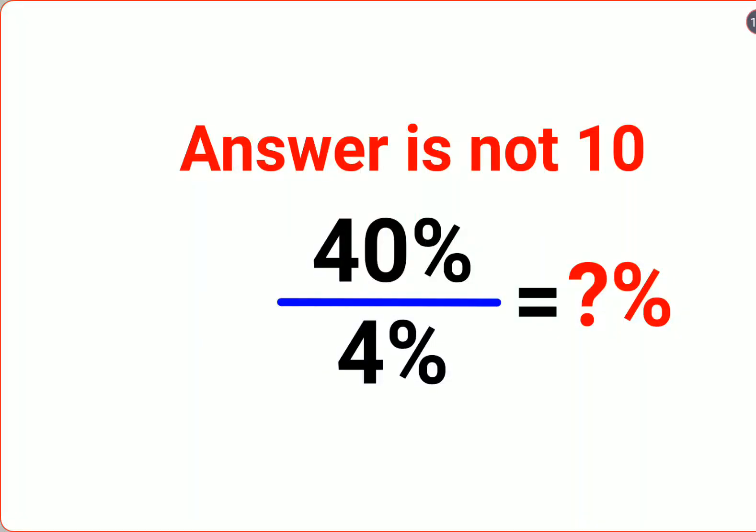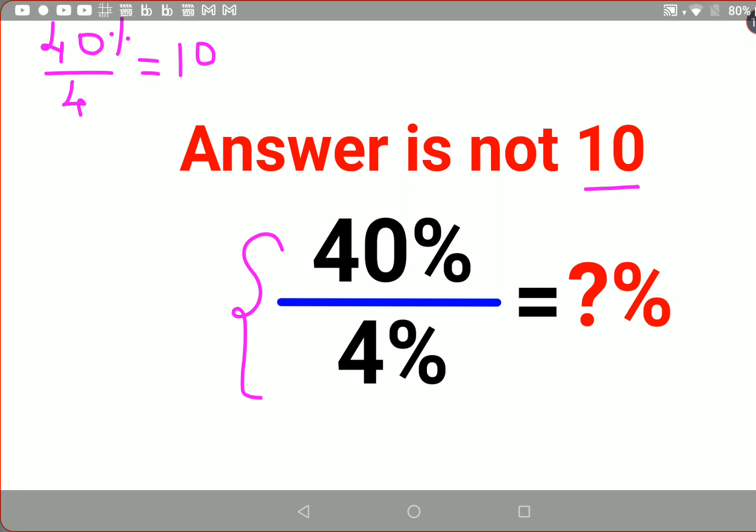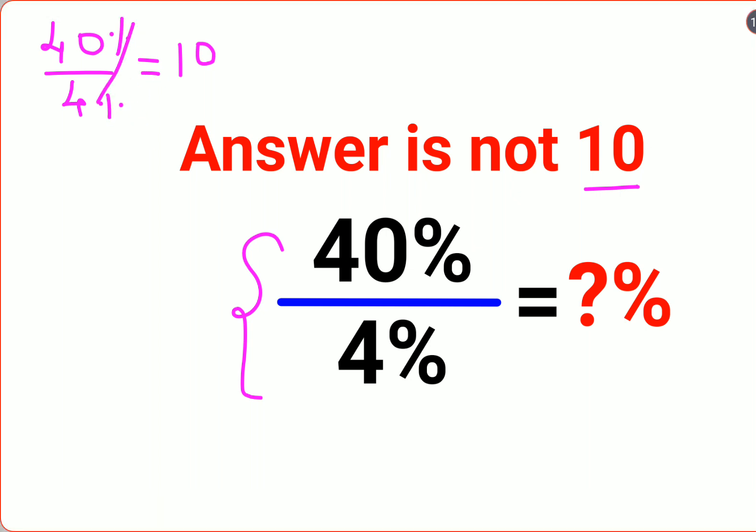Welcome everyone. A lot of people thought that the answer for this one is supposed to be 10 because they think that 40 upon 4 should get you 10. Now actually this is correct and they think that the percentage sign will cancel itself out. But still the answer for this question is not 10.